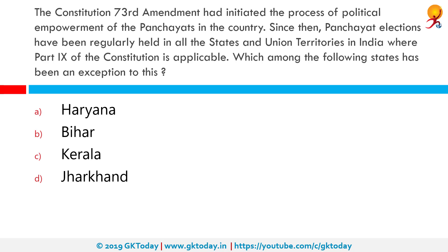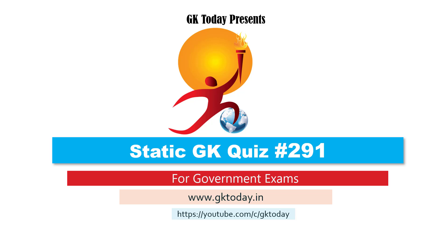The Constitution's 73rd Amendment initiated the process of political empowerment of panchayats in the country. Since then, panchayat elections have been regularly held in all states and union territories where Part 9 of the Constitution is applicable. Which among the following states has been an exception to this? The correct answer is Jharkhand. That's all for today's quiz — until the next video, goodbye!